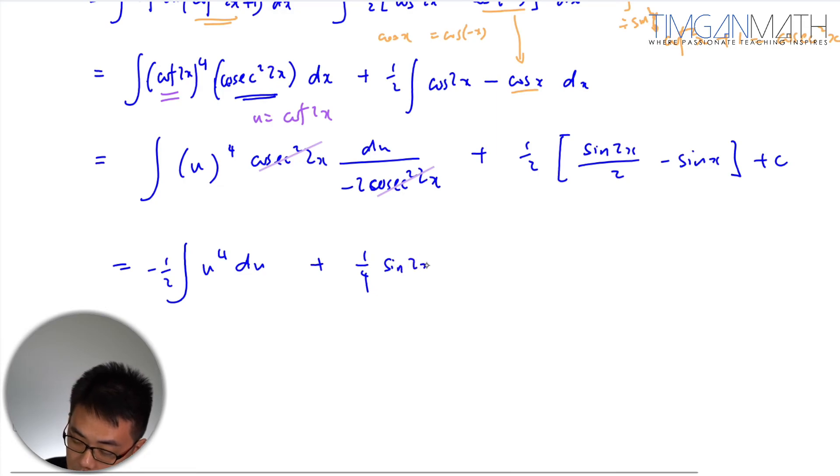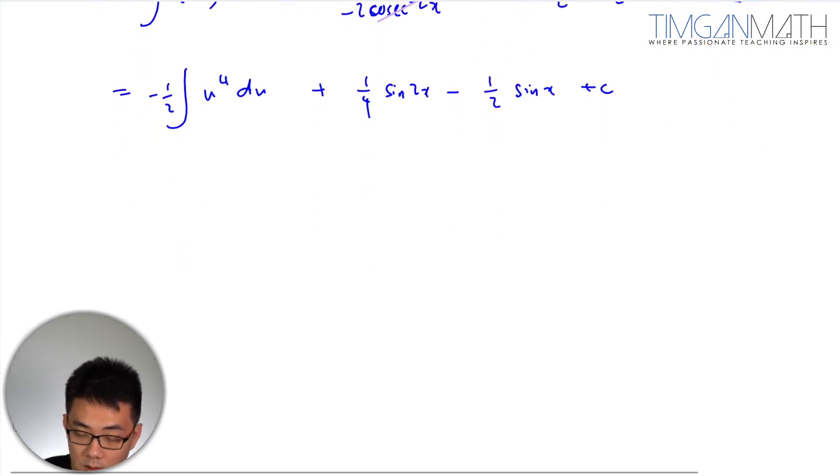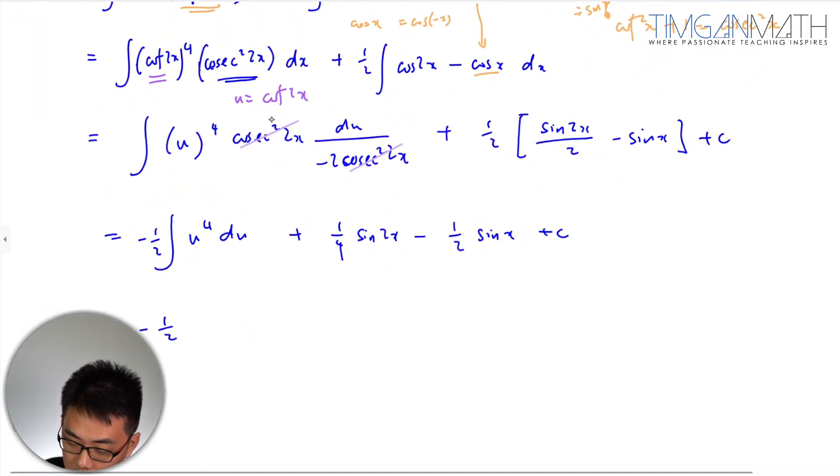And we'll get this as cancel it out this will be minus half u the power 4 du so plus 1 quarter sine 2x minus half sine x plus c. So this case here very quickly u is our cosecant, cot square, so this is cot to the power 5, 2x over 5. There you go.